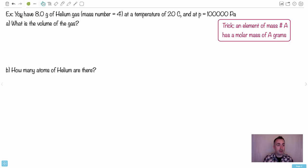So we have an example here where you have 8 grams of helium gas. Helium has a mass number of 4, you might remember that from atomic physics. Helium is He, which is 2,4. It's got four nucleons, we say. We know it has two protons and then two neutrons. It's got a mass number of 4.